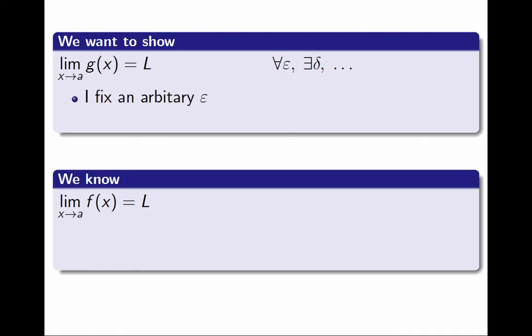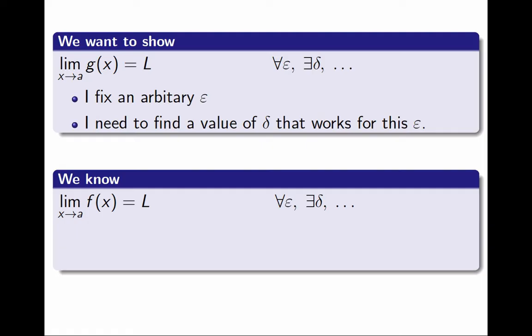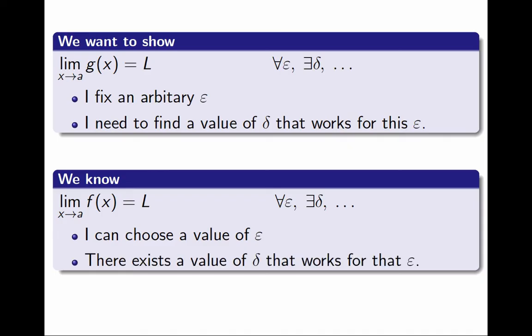In the proof, I'm going to have to fix an arbitrary value of epsilon, and then I will have to say how I find a value of delta that works for this epsilon. By contrast, when we assume the limit of f is L, there is nothing to prove. In the definition of limit — for every epsilon there exists a delta — I don't need to fix an arbitrary value of epsilon. Instead, if I need it, I get to choose any value of epsilon that I want, and then for that value, we know it is guaranteed that there exists a value of delta that works. That's the difference. The same idea appeared in the proof of the limit law for sums; I will link that video in the description.